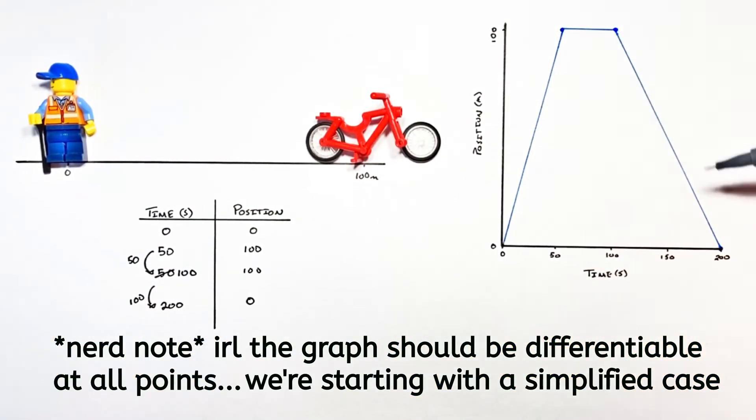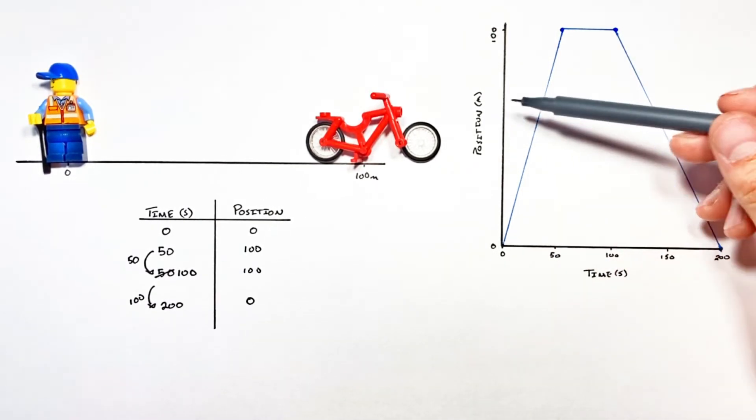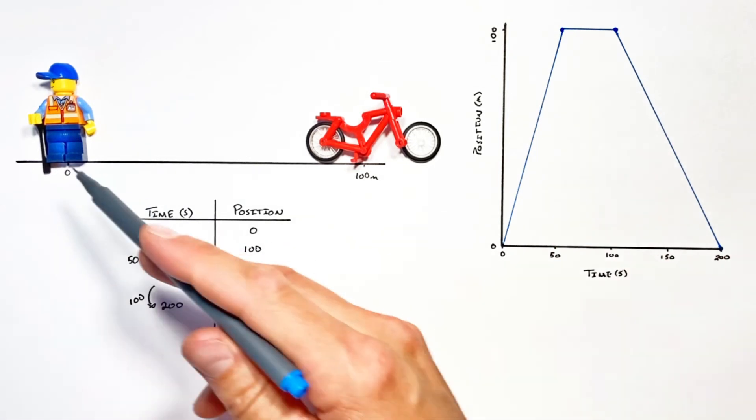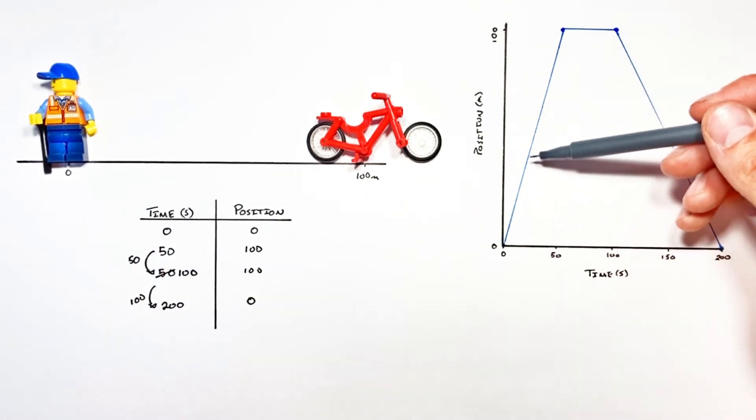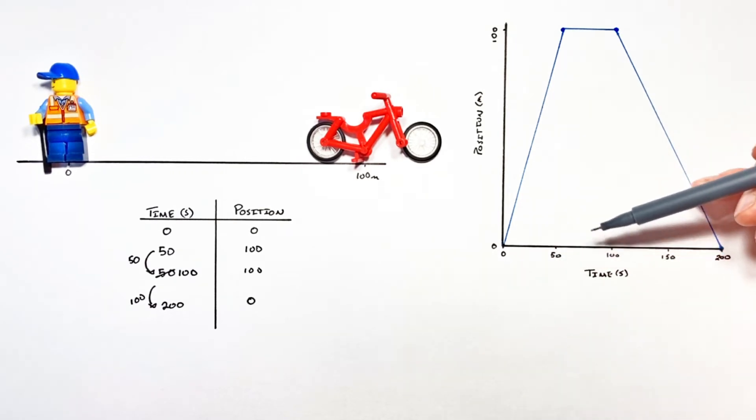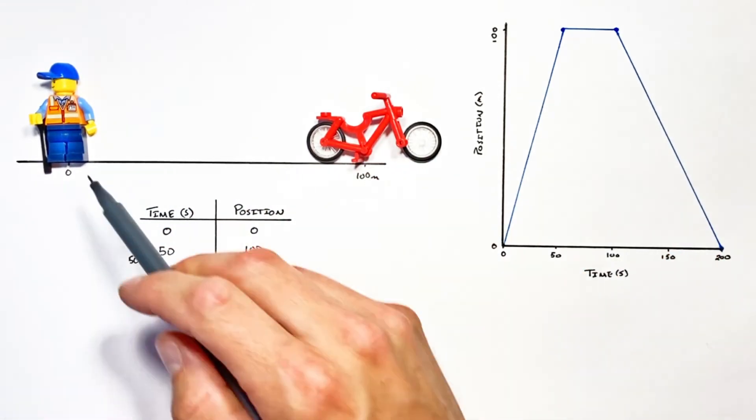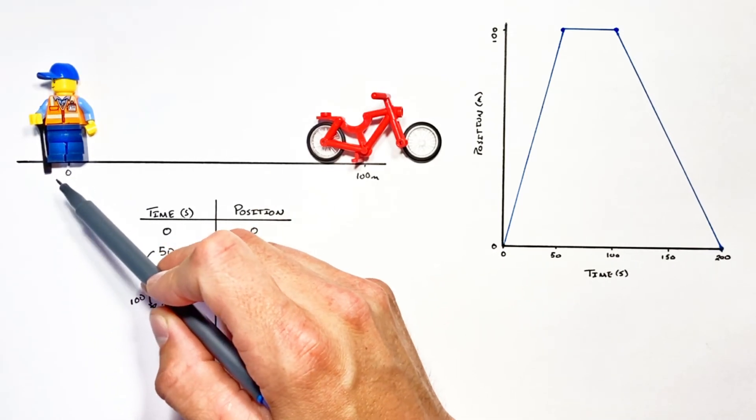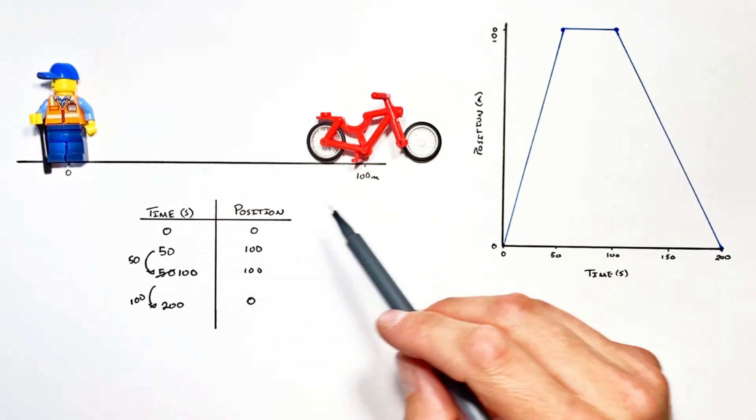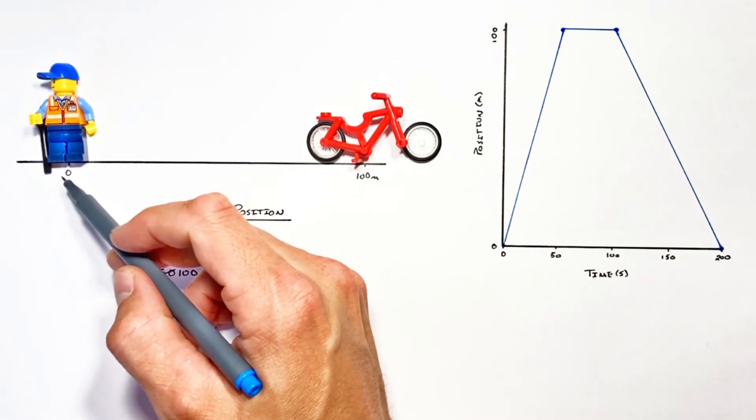So connecting these four data points together we get a graph that shows us the position on the y-axis versus time of our little guy. Ultimately the higher this line is away from our x-axis here the farther he was to the right from where he started. Now I mentioned earlier that this position of zero was arbitrary and realize it is.